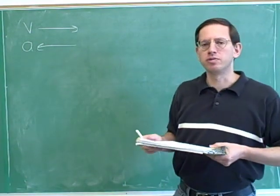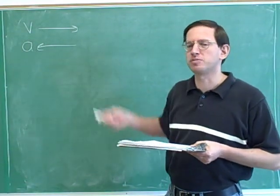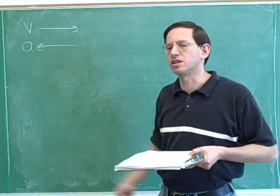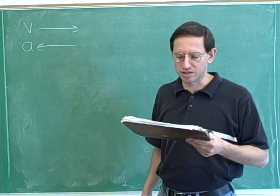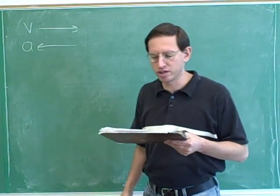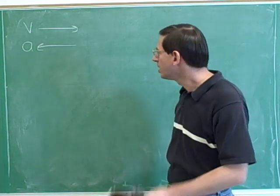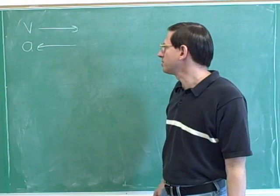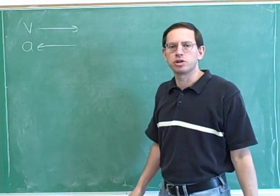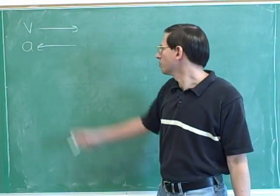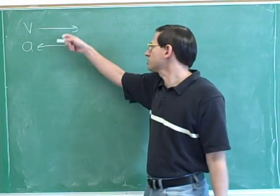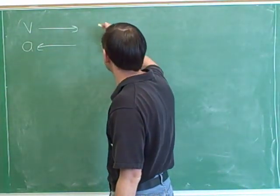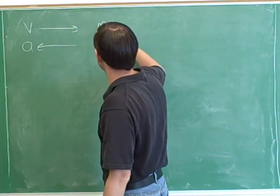Now, this first question was supposed to be review — just a review of ideas that we've seen in the previous series of videos on one-dimensional motion. Remember from the previous series that the velocity tells you which way you're going. The velocity here is pointing to the right, so we can say this object is moving right.